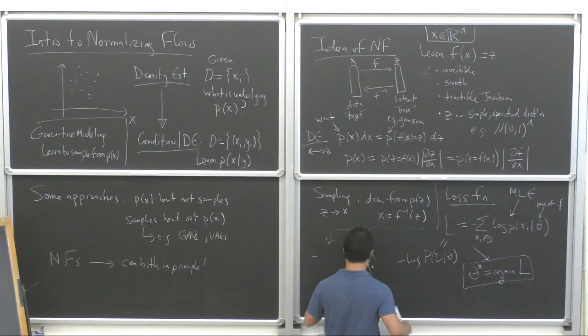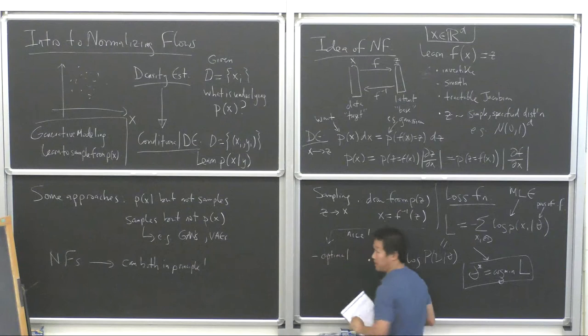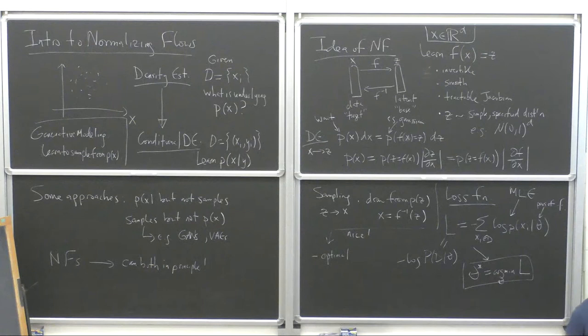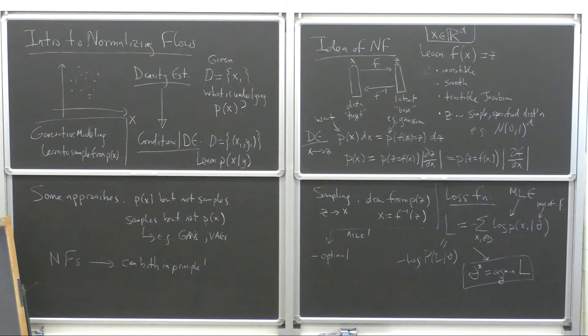This is nice because MLE is generally the best thing you can do if you have access to it. Question: but this loss is unbounded, right? Well — I think it's convex, because the probability has to integrate to one. But yes, it could approximate delta functions, which would make it unbounded.